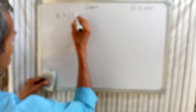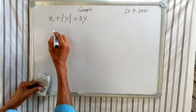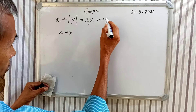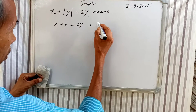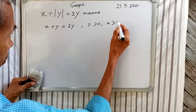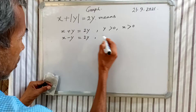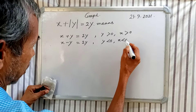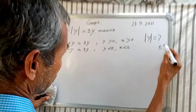We have x plus mod y equal to 2y. When y is greater than 0 and x is greater than 0, this becomes x plus y equal to 2y. When y is less than 0, it becomes x minus y equal to 2y. And mod y equals plus or minus something depending on the sign of x.